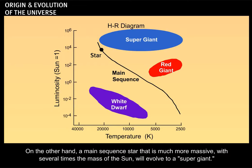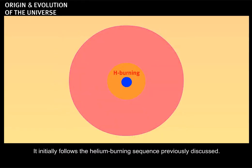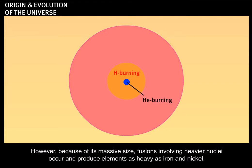On the other hand, a main sequence star that is much more massive, with several times the mass of the Sun, will evolve to a supergiant. It initially follows the helium burning sequence previously discussed. However, because of its massive size, fusions involving heavier nuclei occur and produce elements as heavy as iron and nickel.